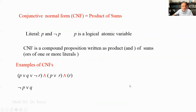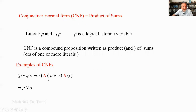Conjunctive Normal Form, CNF, is product of sums. Literals are P and NOT P, where P is a logical atomic variable. CNF is a compound proposition written as a product (AND) of sums (OR) of one or more literals.